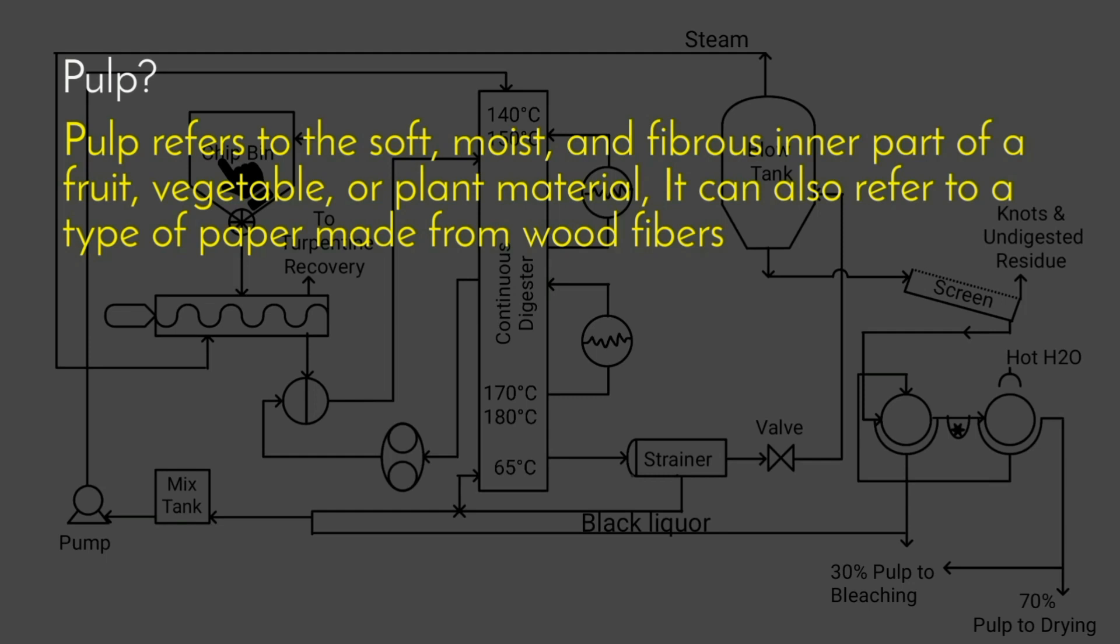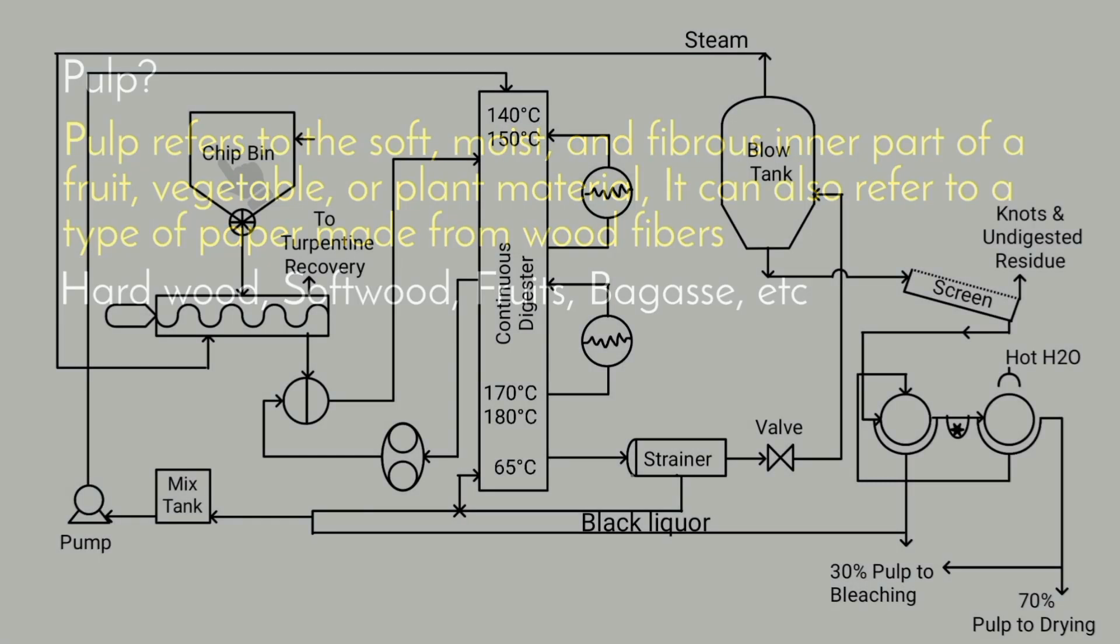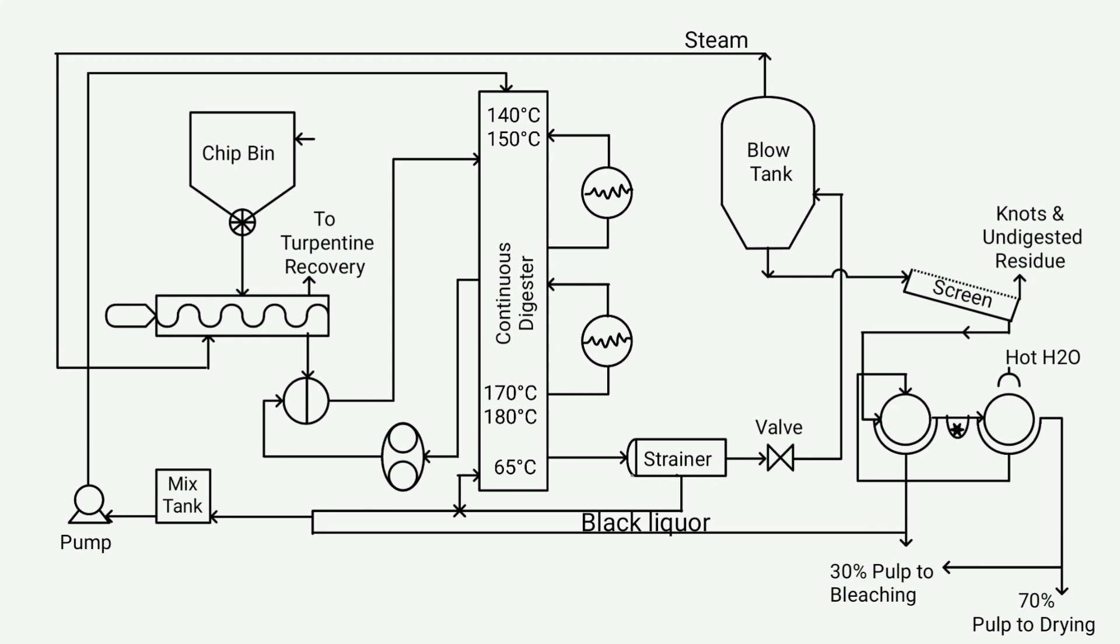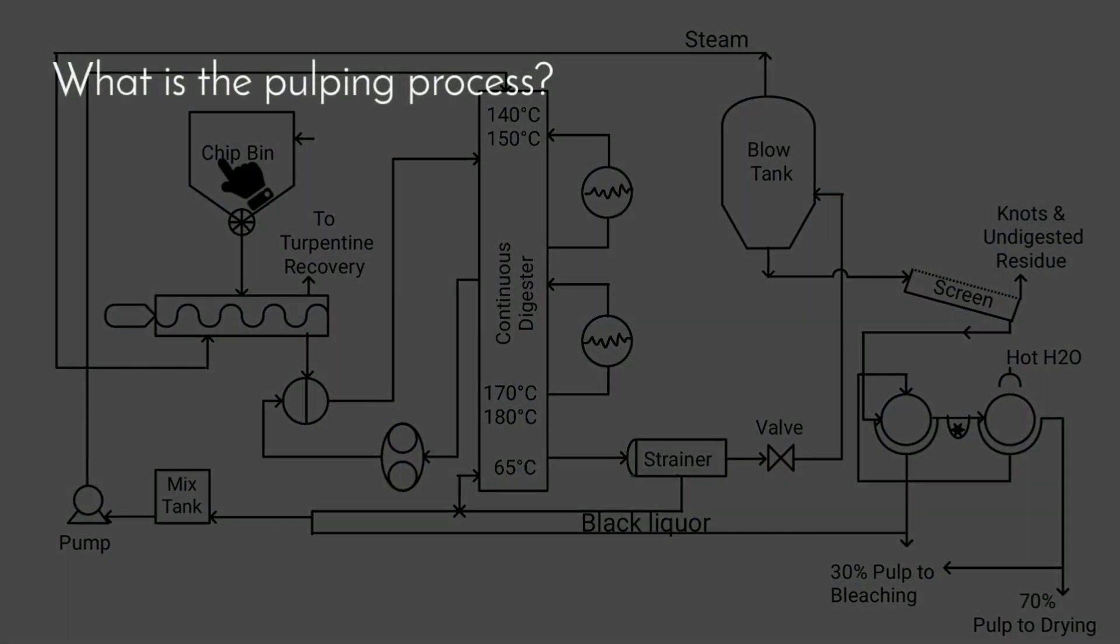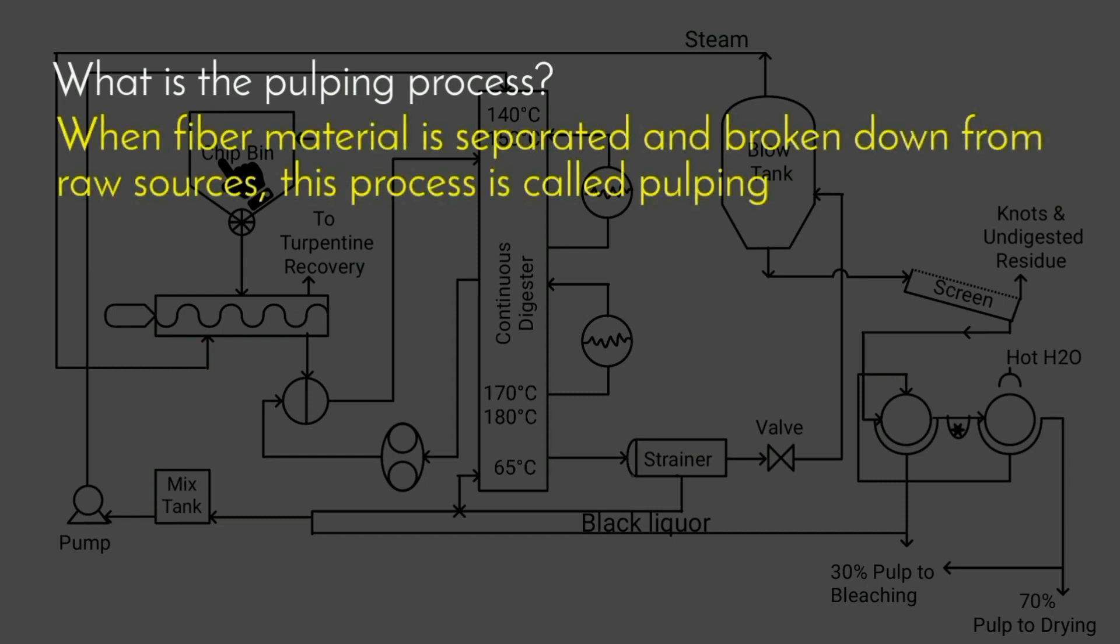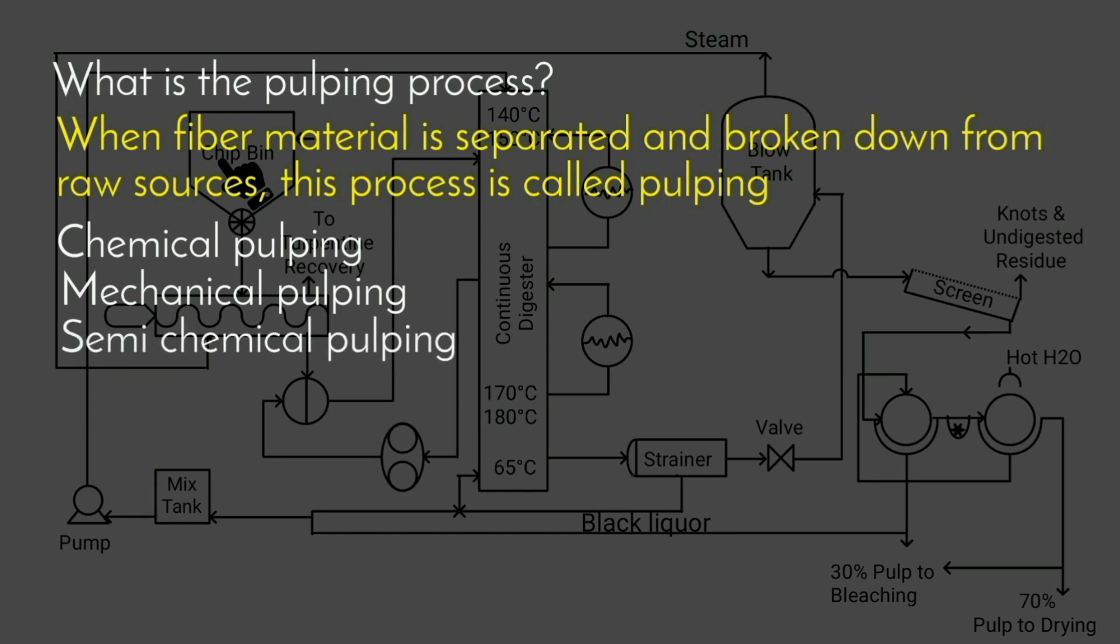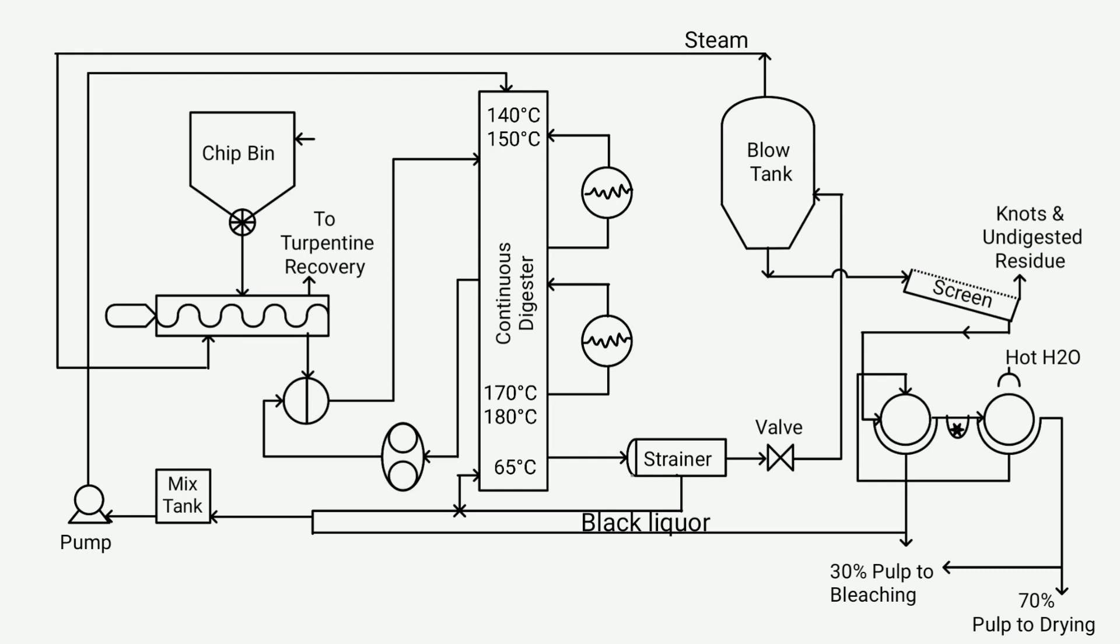When it comes to raw materials for pulp, hardwood, softwood, fruits, bagasse, etc. are used. For your information, in the production of pulp, the main process is pulping. Now the question arises, what is the pulping process? When fiber material is separated and broken down from raw sources, this process is called pulping, which mainly involves three types: chemical pulping, mechanical pulping, and semi-chemical pulping. In most industries, chemical pulping is predominantly used. This video also explains the production of pulp using chemical pulping.